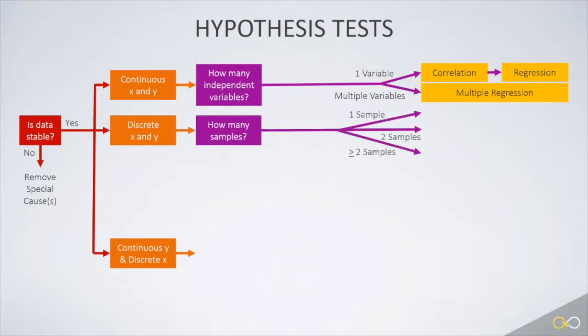When both the dependent and independent variables are discrete, we need to ask the question again, how many samples are involved in the hypothesis? If only one sample is involved, do a one-sample test of proportions. If two samples, do two-sample test of proportions, and if more than two samples, do a chi-square test.